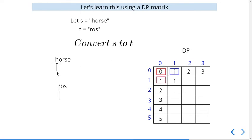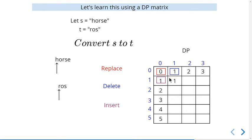When h and r don't match, we look at three values: the diagonal (replace), the cell above (delete), and the cell to the left (insert). We take the minimum of these three values and add 1. For example, 0+1, 1+1, 1+1 gives us minimum 1. Similarly, we fill each cell in the matrix.